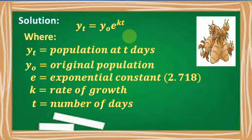In this equation, y_t is the population at t days, y₀ is the original population, e is the exponential constant which is 2.718, k is the rate of growth, and t is the number of days.